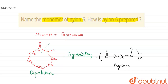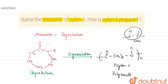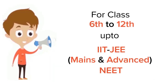This is nylon 6, and the 6 refers to 6 carbon atoms — 5 from the CH2 groups and 1 from the carbonyl carbon. It is also known as polyamide, because further units join via a C double bond O linkage forming amide bonds, resulting in n number of amide units — that is why it is called polyamide.